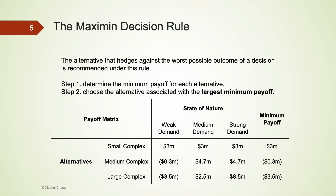In contrast to the maxi-max decision rule, the maxi-min rule is suitable if the decision maker pessimistically assumes that nature will always be against him regardless of what decision is made. The recommendation is made on the alternative that hedges against the worst possible outcome. To apply the maxi-min decision rule, we first find the minimum payoff for each alternative, and then choose the alternative associated with the highest minimum payoff. In our example, the company should build a small complex and expects a payoff of $3 million.